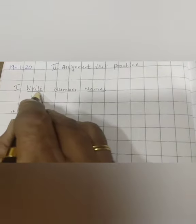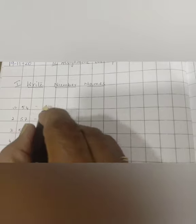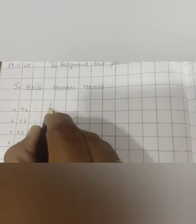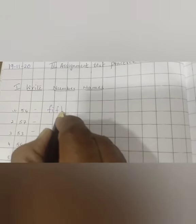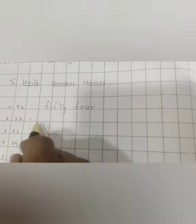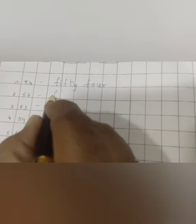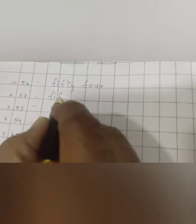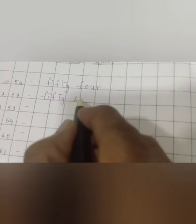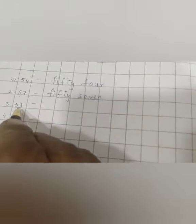Write number names. See, children, what is the first number? 54. What is the spelling of 50? F-I-F-T-Y, 50, F-O-U-R, 4. 54. What is the next number? 57. What is the spelling of 57? F-I-F-T-Y, 50, S-E-V-E-N, 7. 57. Next number is 53.